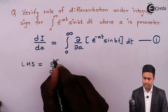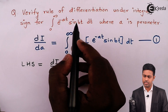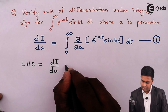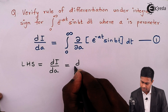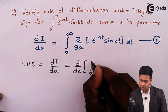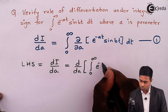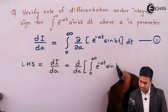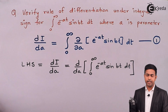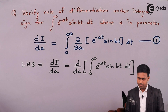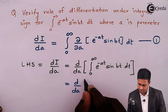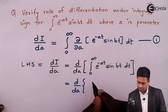Let's get the value of dI by dA. Here I is the integral given in the problem, so it is equal to D by DA of the integration from 0 to infinity of e raised to minus at sin bt dt. We will solve this integration first.